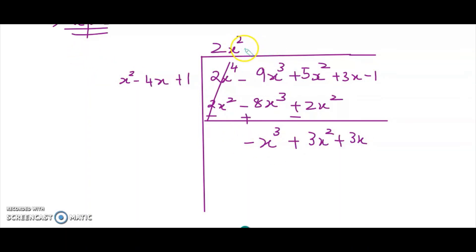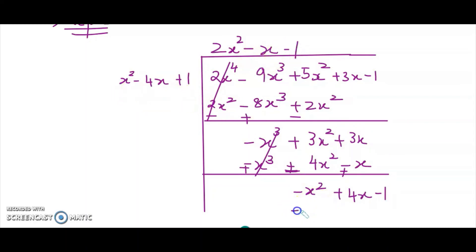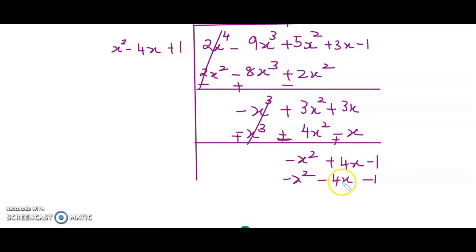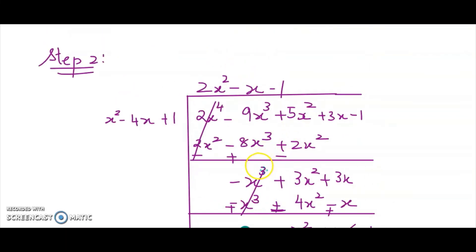Dividing minus x cubed by x squared gives minus x. Multiplying minus x with all three terms: minus x cubed, plus 4x squared, and minus x. After subtracting with sign change, this leaves minus x squared plus 4x minus 1. Dividing minus x squared by x squared gives minus 1. Multiplying minus 1 with all three terms gives minus x squared plus 4x minus 1. Subtracting gives 0 remainder. Our quotient is 2x squared minus x minus 1.